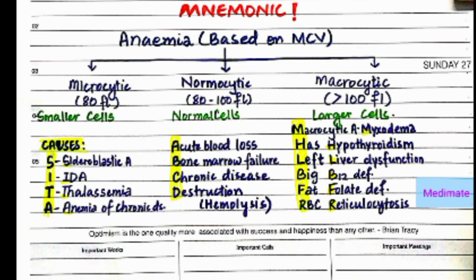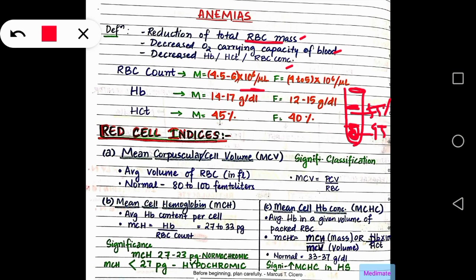Now we come to macrocytic anemia. You must remember this mnemonic: macrocytic anemia has left big fat RBC. From the first letters — M for myxedema, H for hypothyroidism, L for liver dysfunction, B for B12 deficiency, F for folate deficiency, and R for reticulocytosis.